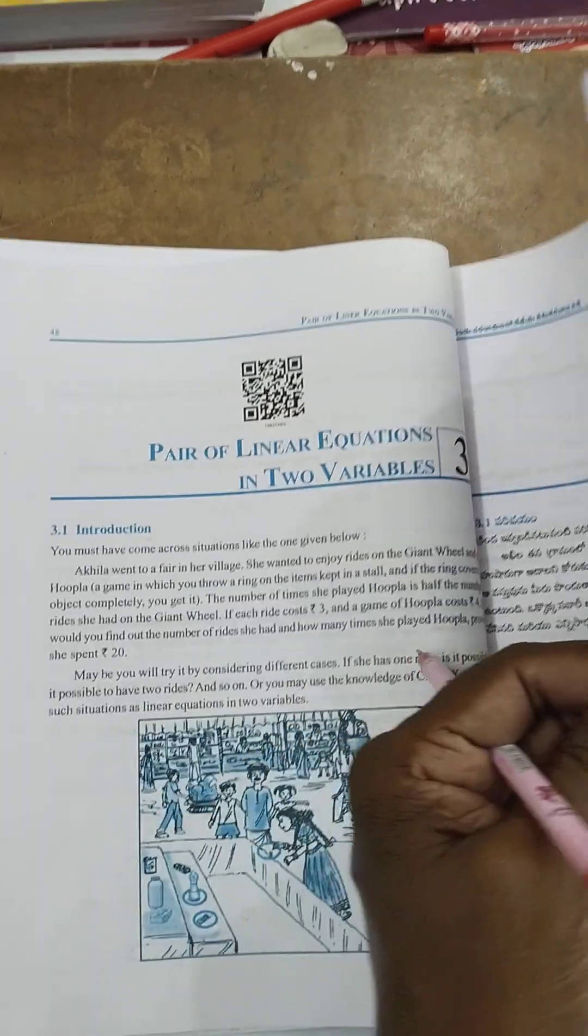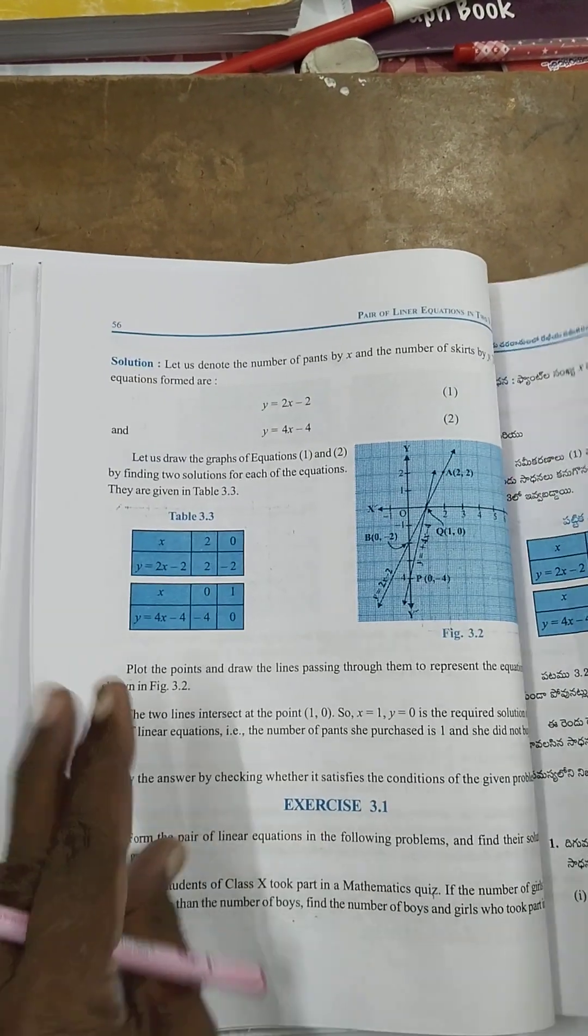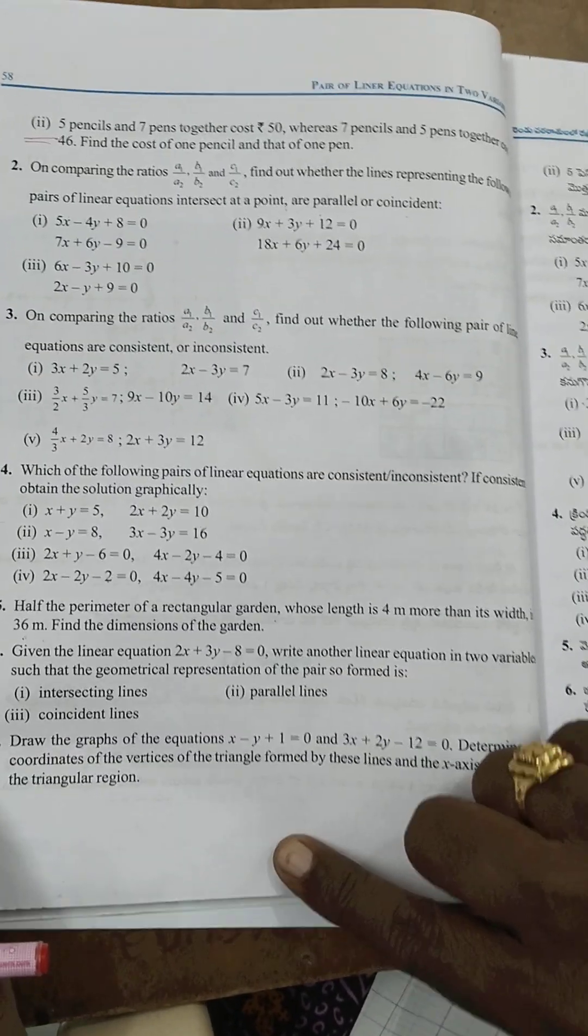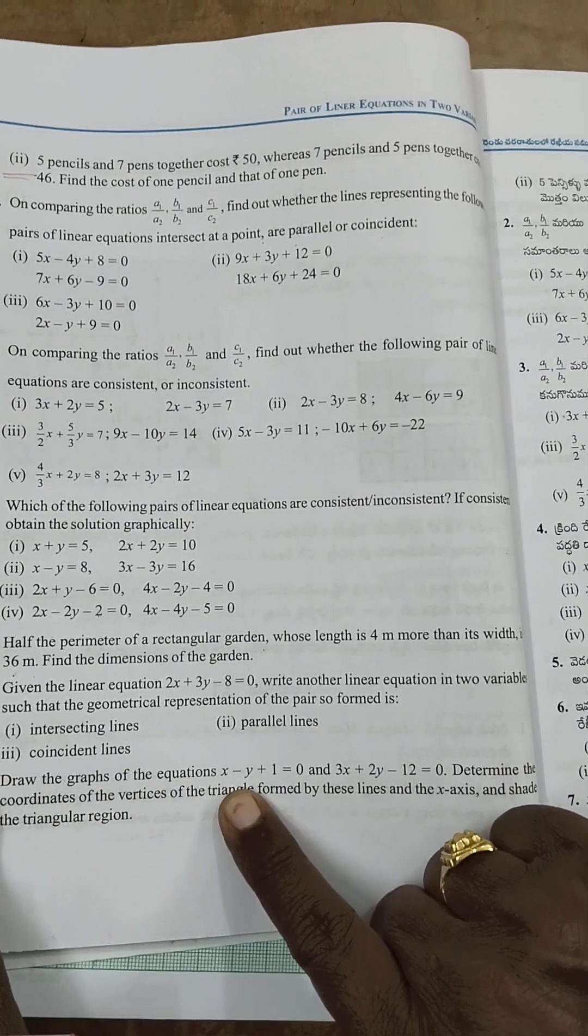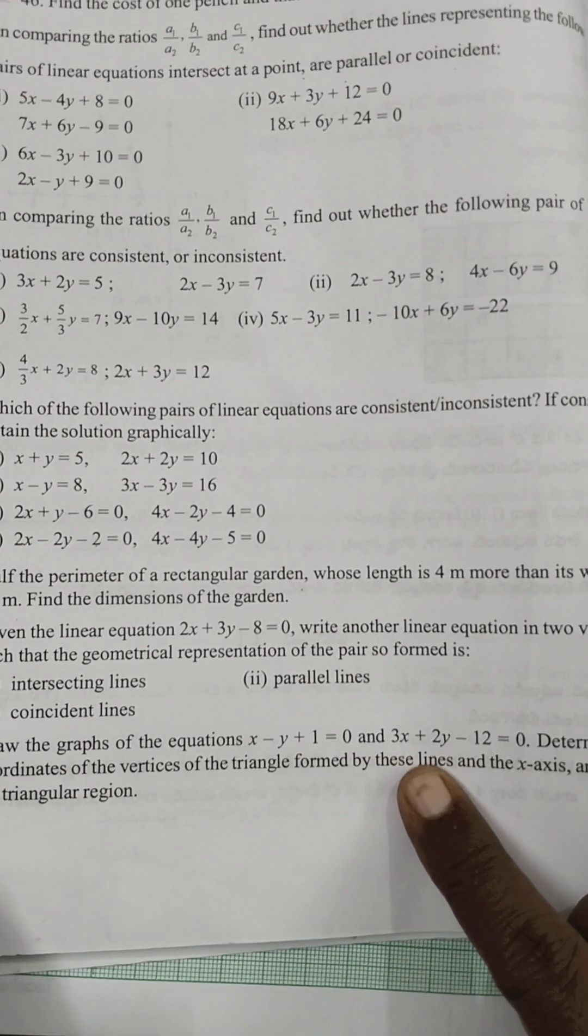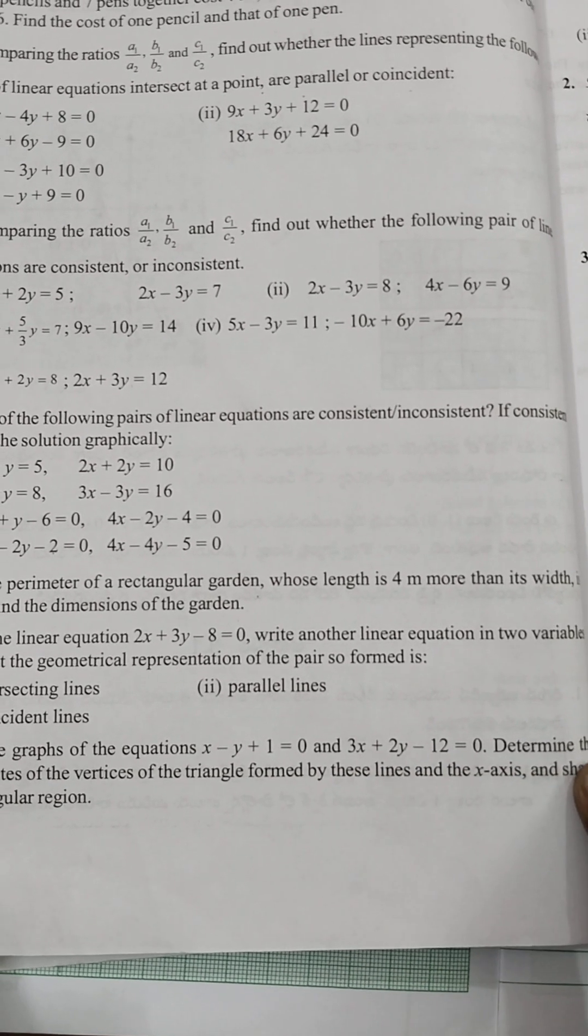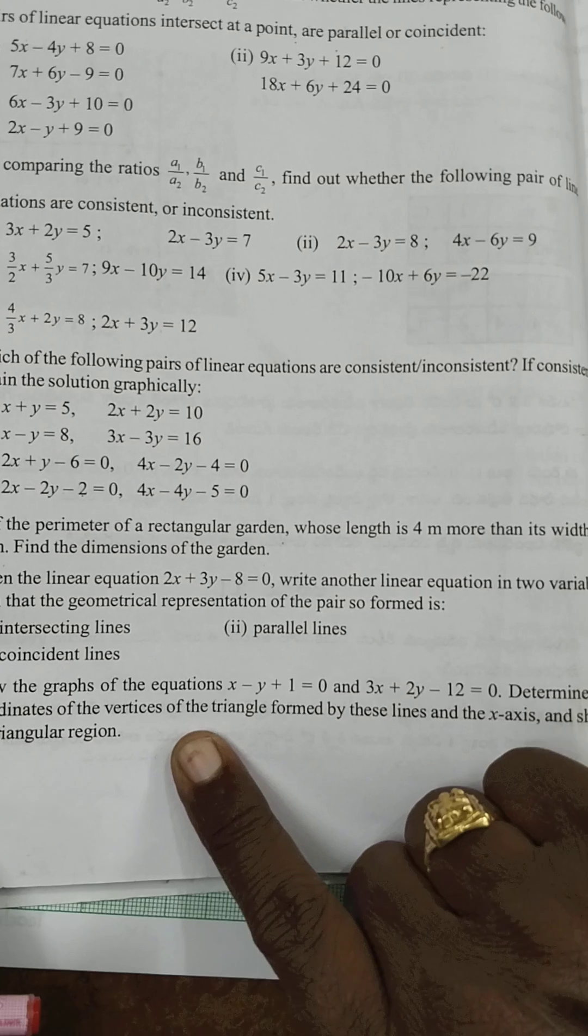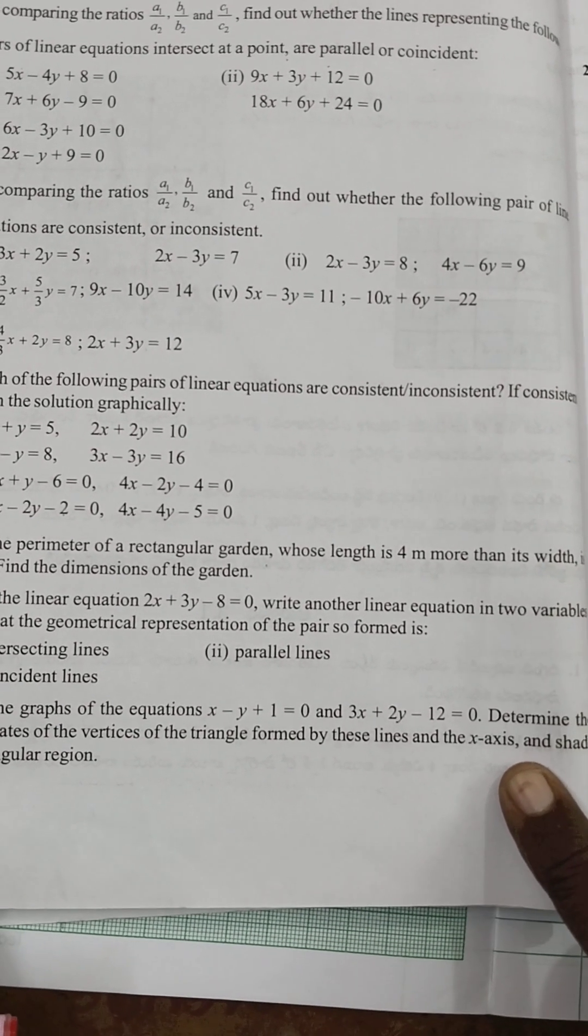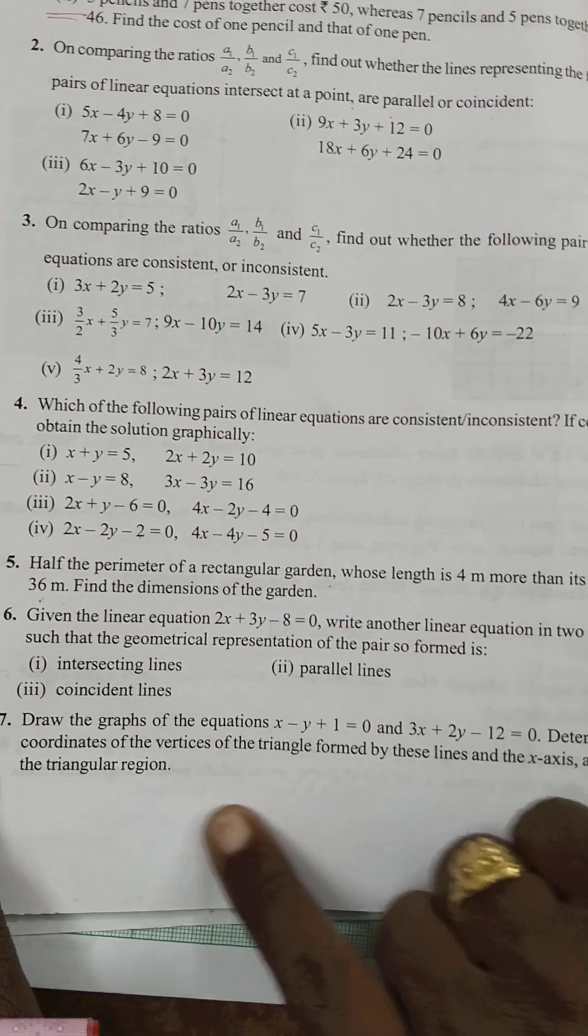Exercise 3.1, problem 7. Draw the graph of the equations x minus y plus 1 equal to 0 and 3x plus 2y minus 12 equal to 0. Determine the coordinates of the vertices of the triangle formed by these lines and the x-axis and shade the triangle region.